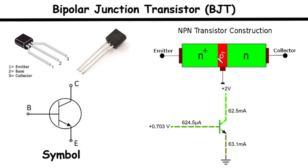Base collector junction. The base collector junction is formed between the moderately doped N-type collector and the P-type base. Unlike the base emitter junction, the base collector junction is reverse biased when a suitable voltage is applied.